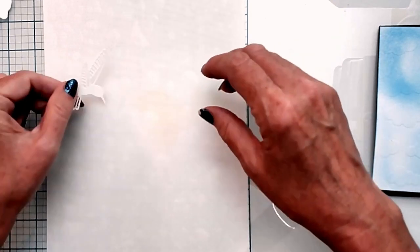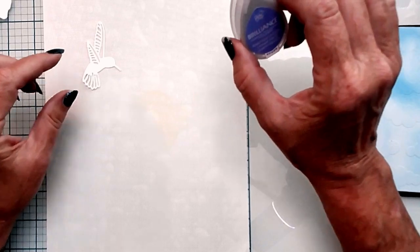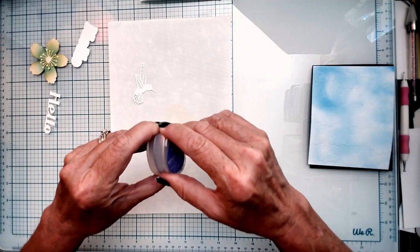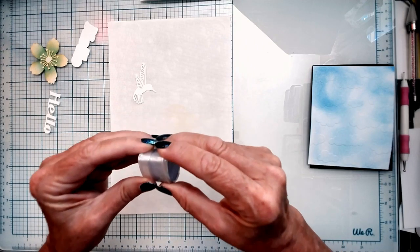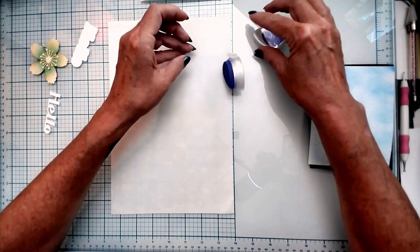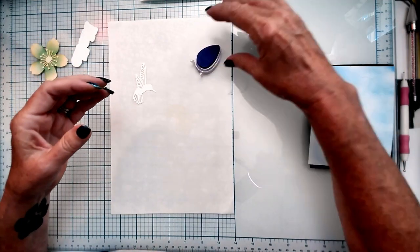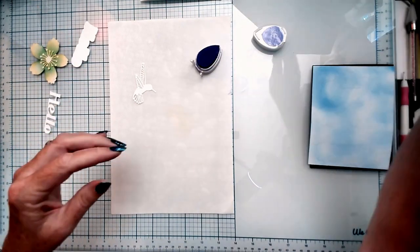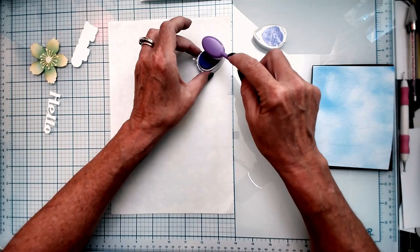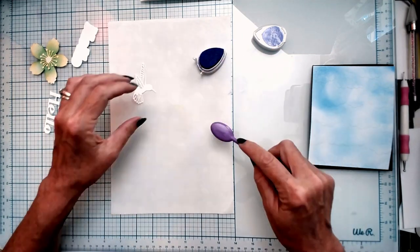With the hummingbird, I decided to use Brilliance Pearlescent Lavender Ink. This ink you have to be careful that you don't apply too much. It's very pretty. It has an iridescence to it, but that word doesn't even give it justice.